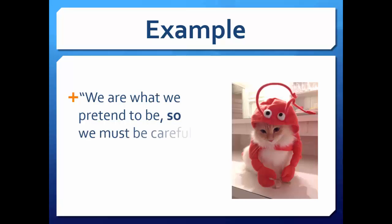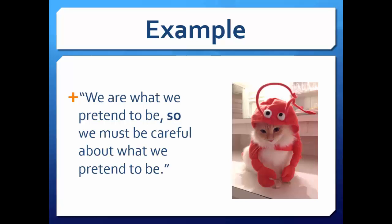Another example is: "We are what we pretend to be, so we must be careful about what we pretend to be." This sentence appears complex because of its wording, but it contains two independent clauses: "we are what we pretend to be" and "we must be careful about what we pretend to be."